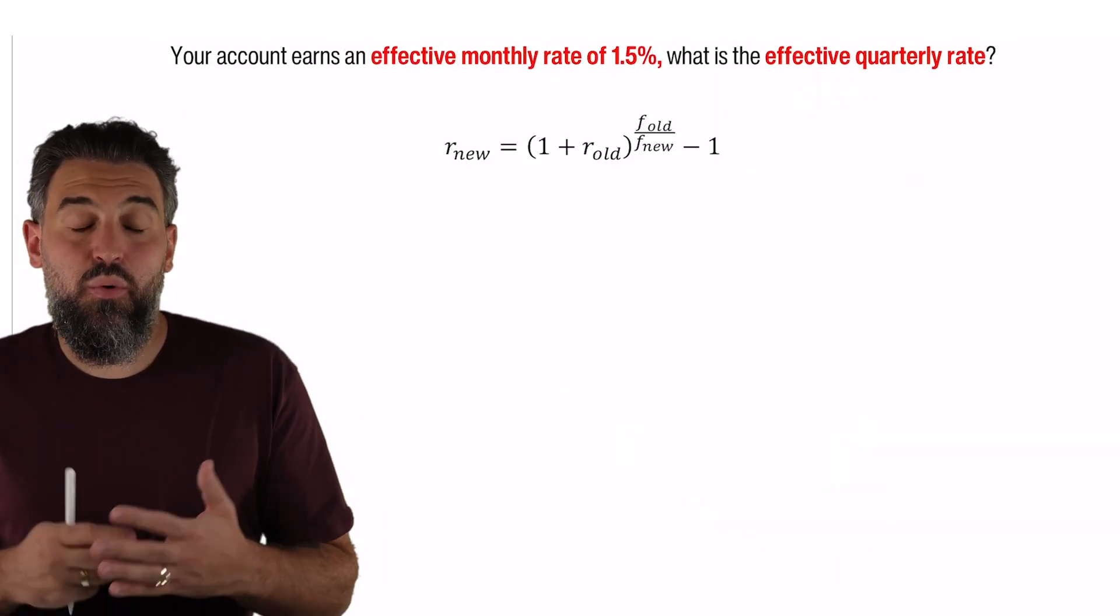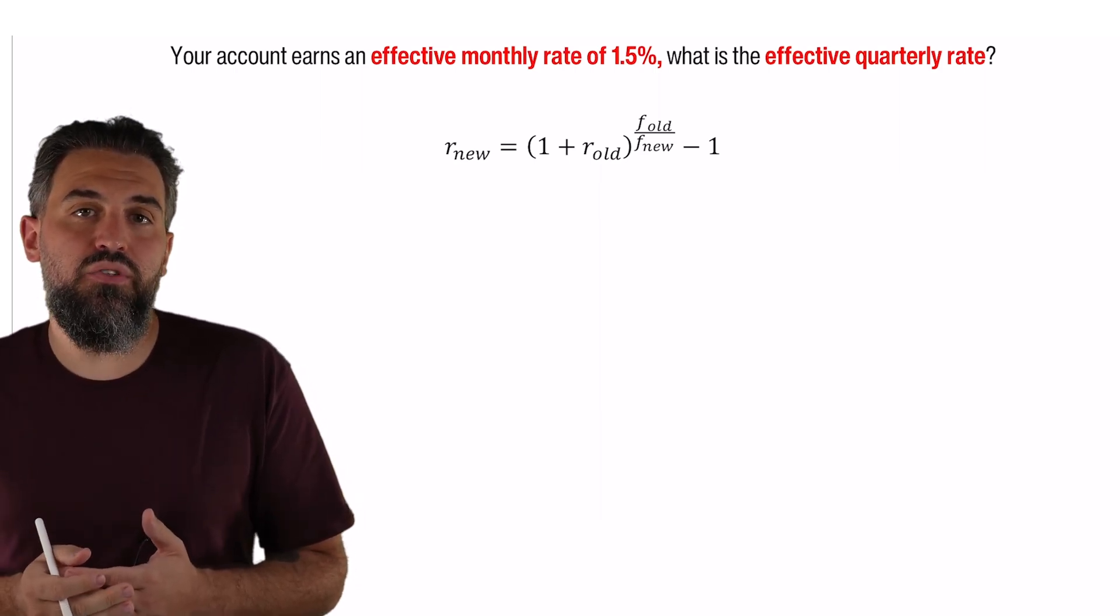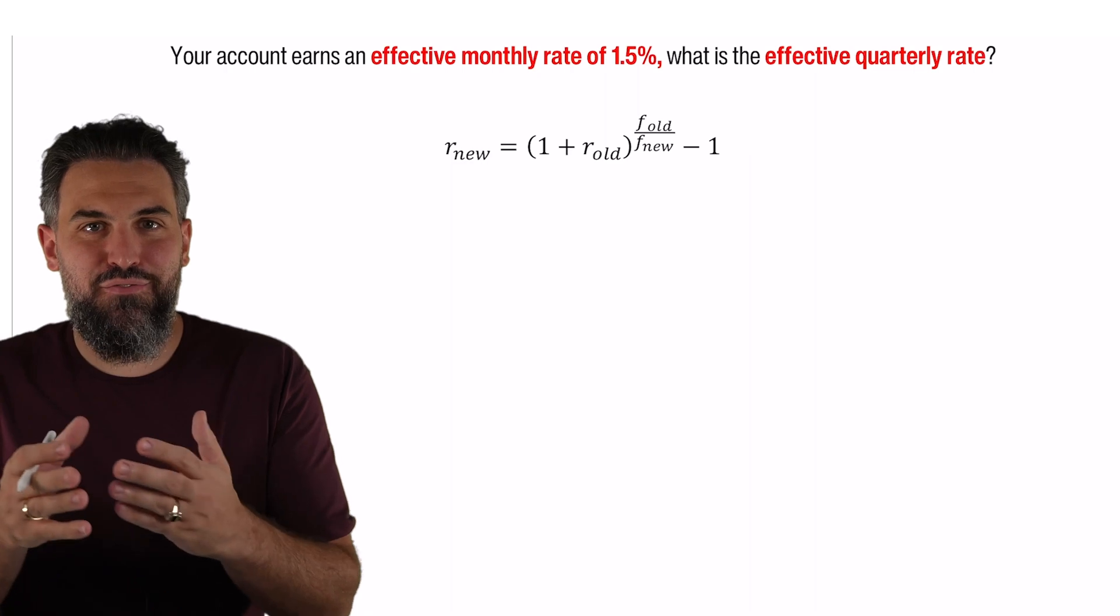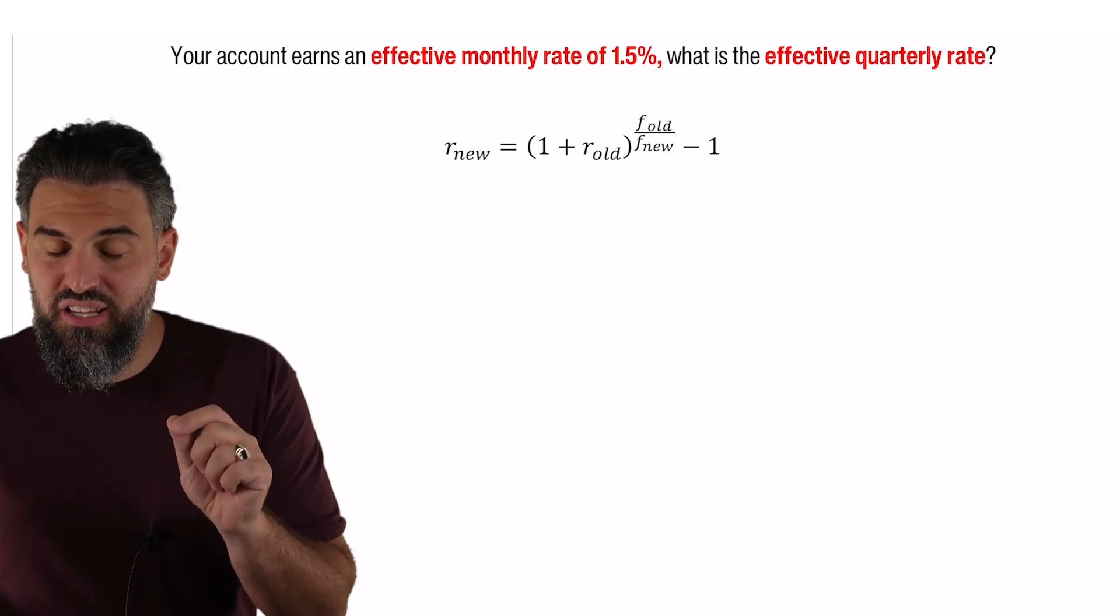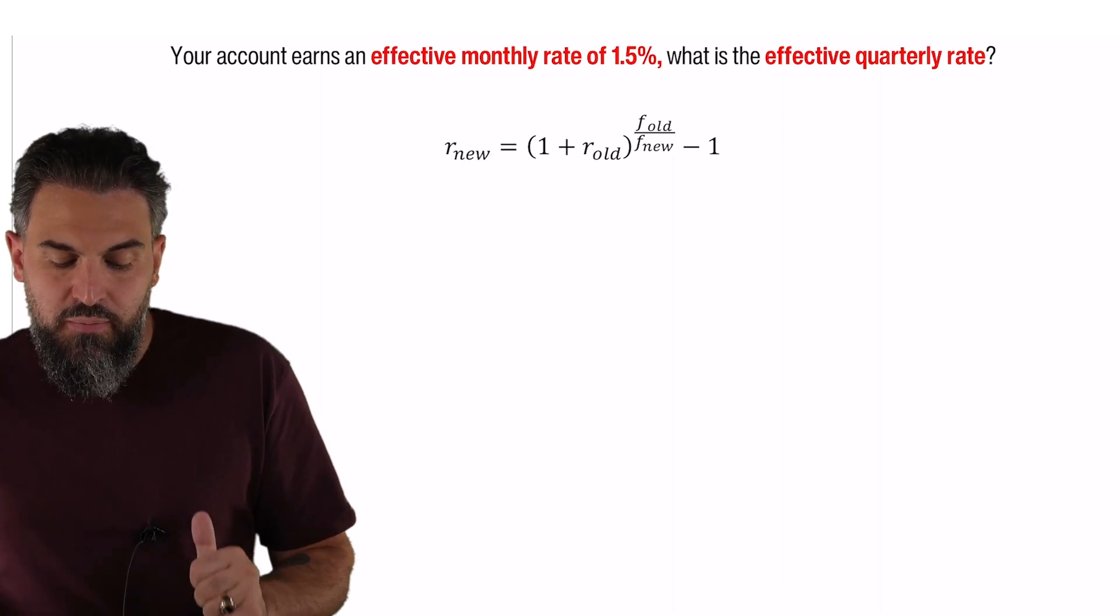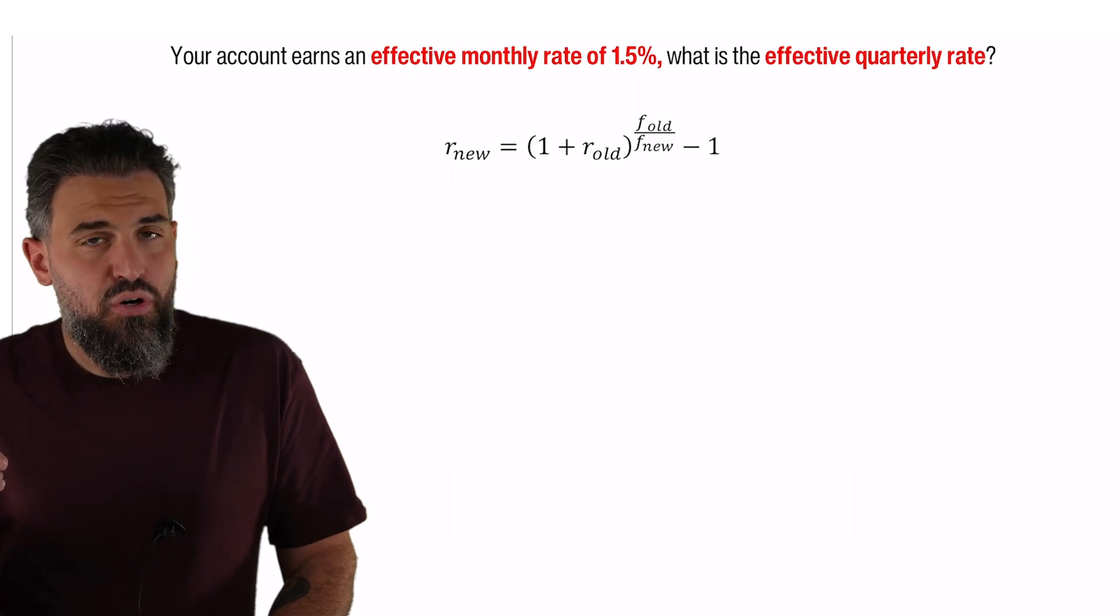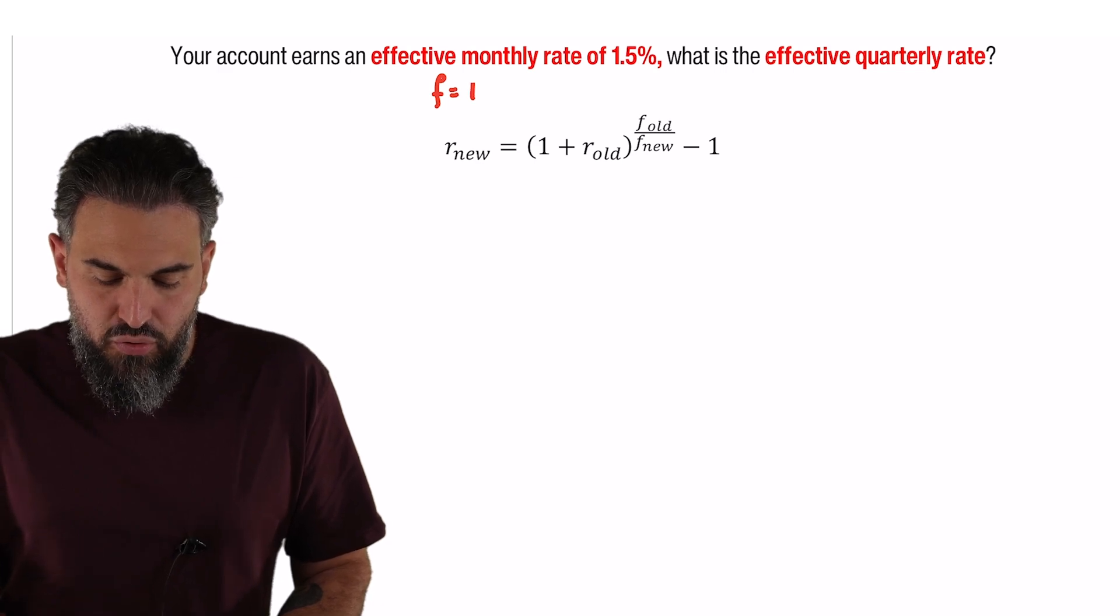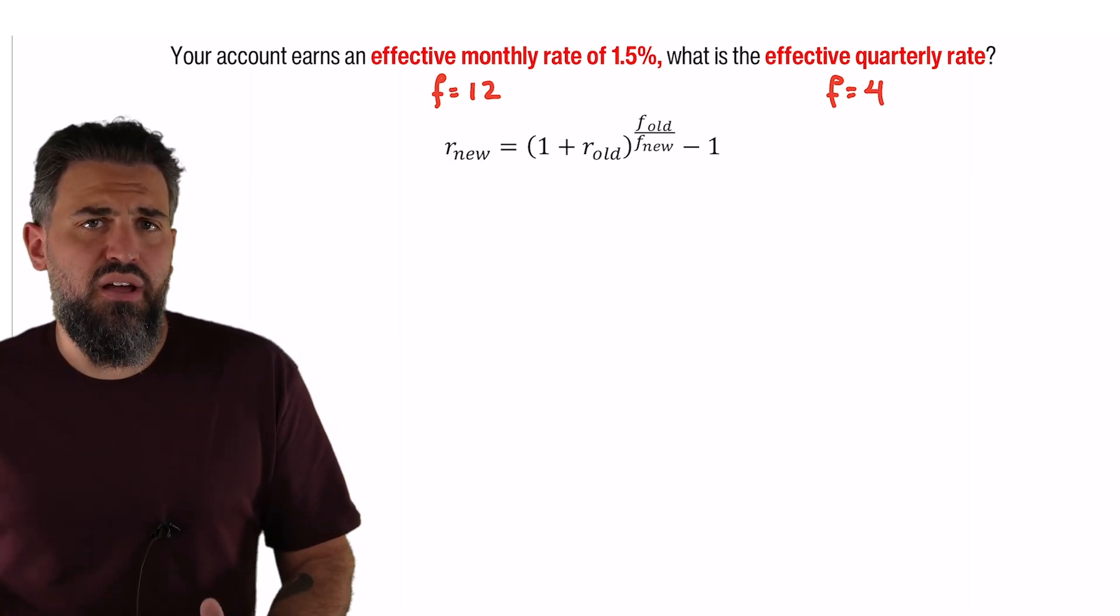Now what if you already have an effective rate and you want a different one? Here I'll show you how to convert one effective rate into another. So now we're no longer dealing with an APR, we're going from effective to effective. In this example it says your account earns an effective monthly rate of 1.5%. So I've given you an effective monthly rate, what is the effective quarterly rate? Very simple to do. I've given you a formula here. All you need is the effective rate you have—we call that R old—to the power of F old over F new. The old is the effective you have. So I've got an effective monthly rate, my F old is 12. I want to convert that to a new rate that is quarterly, so my new F is 4.